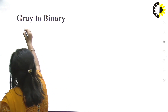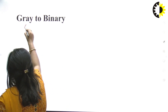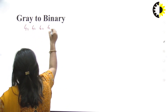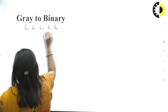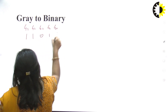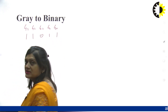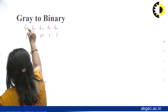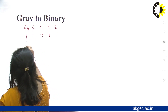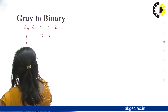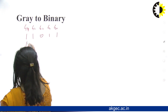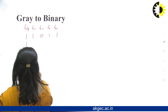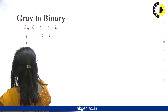For gray code to binary conversion, we have gray code G4, G3, G2, G1, G0 = 1, 1, 0, 1, 1. B4 is always the same as G4, so B4 = 1.